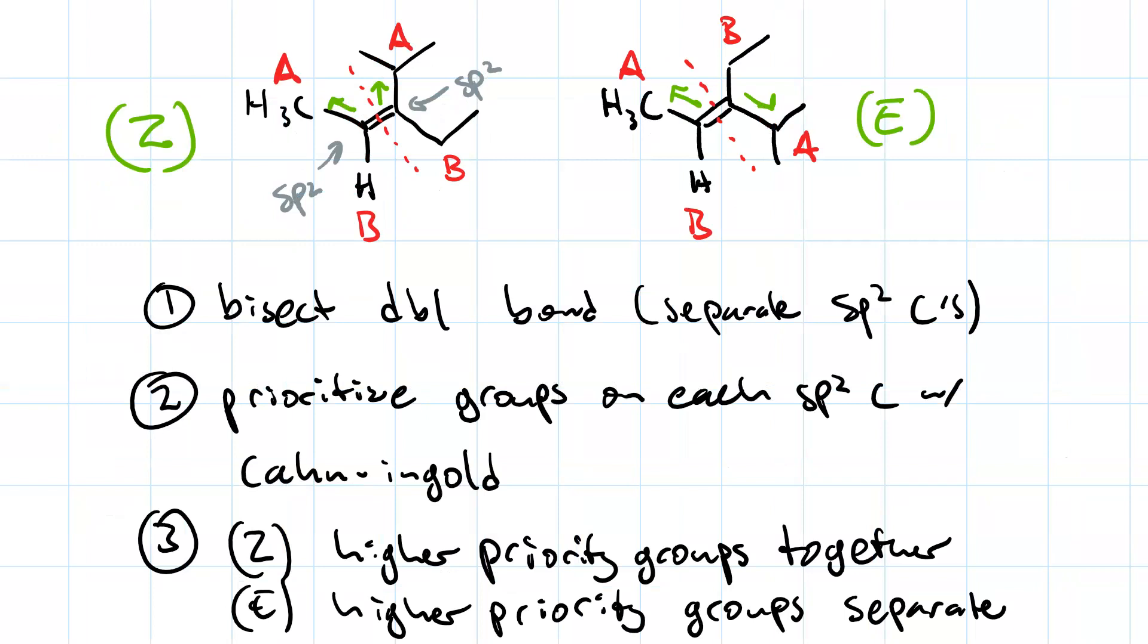So then, to name this compound, first I would number it. I'd make the methyl group number one, to give my double bond the lowest possible locant. And so, my parent chain is pent-2-ene.